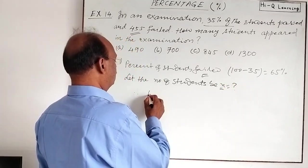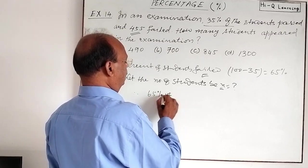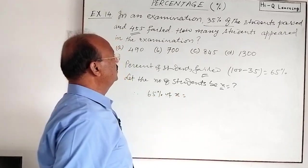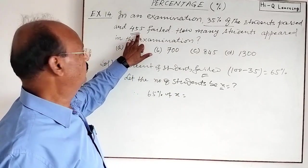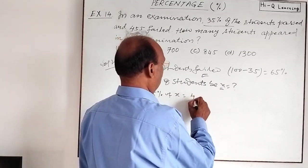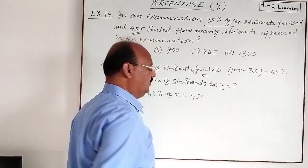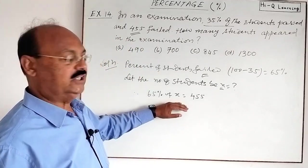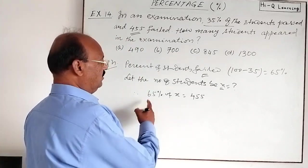So 65 percent of X equals 455. Let us simplify and find out the value of X. 65 percent means 65 by 100, and 'of' means multiply. So 65 by 100 into X equals 455.